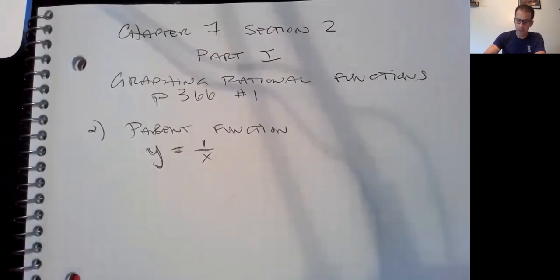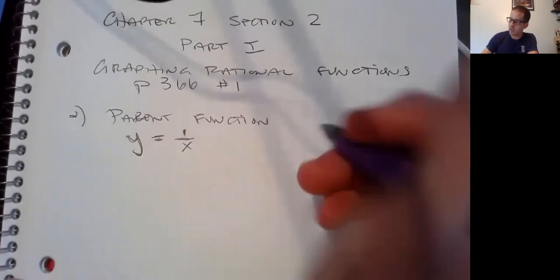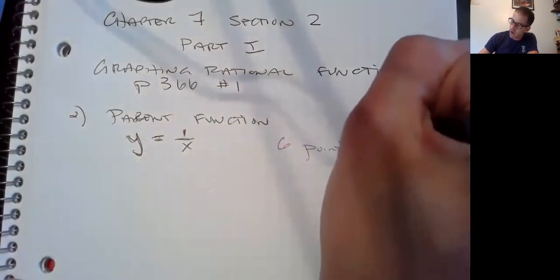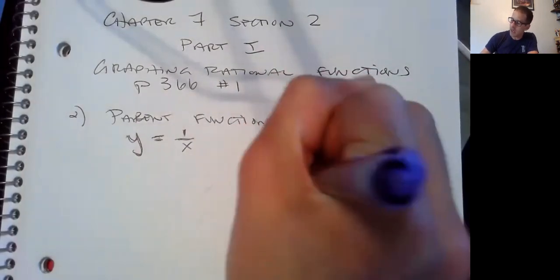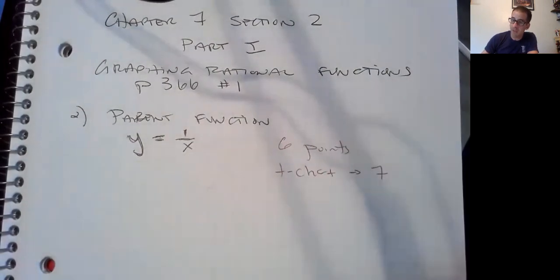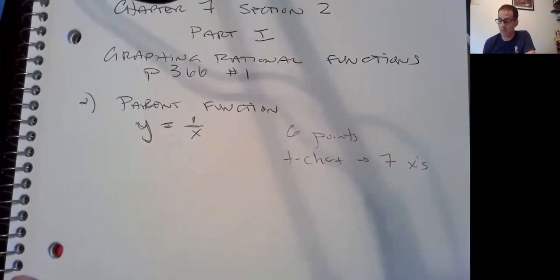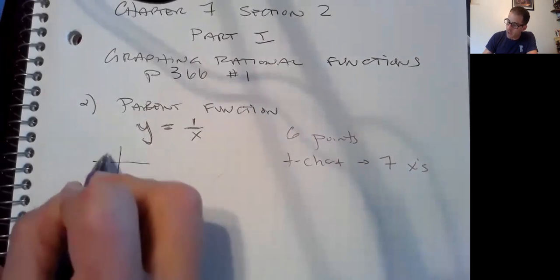Hopefully you said inverse. All right, things that you need: you need for me always six points. However, in your t-chart, I need you to have seven x's. Okay, here's what I mean before we even graph. Let's start our t-chart.